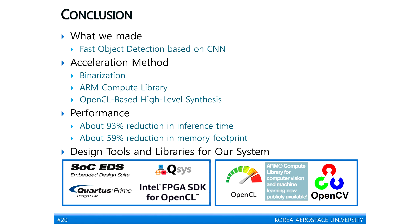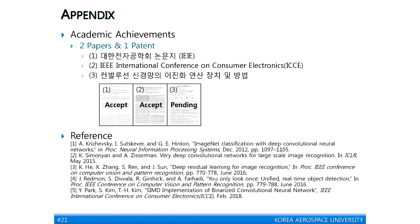저희의 최종 결론을 말씀드리겠습니다. 저희는 사이클론 5 SoC의 최적화된 CNN 기반의 고속 오브젝트 디텍션 시스템을 구현하였습니다. 가속화 방법으로는 바이너라이제이션, ARM 컴퓨터 라이브러리, 그리고 OpenCL 기반의 상위 레벨 합성을 통한 하드웨어 가속기를 사용했습니다. 그 결과 성능적으로 약 93%의 수행시간 감소와 59%의 메모리 요구량 감소를 얻었습니다. 부가적으로 바이너라이제이션에 대한 연구 성과로 두 개의 저널 논문과 한 개의 특허 출원을 완료했습니다. 이것으로 발표를 마치겠습니다. 감사합니다.